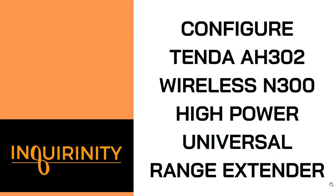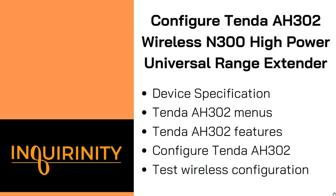Let's configure the Tenda AH302 Wireless N300 High Power Universal Range Extender. In this video, we will first look into its device specification, then power on the device and log in to the Tenda AH302 to look at its menus. We will then go through the rest of its features and configure the Tenda AH302 as an access point.